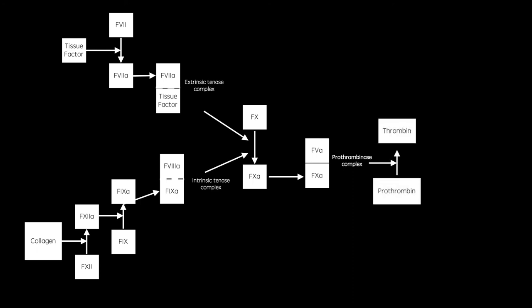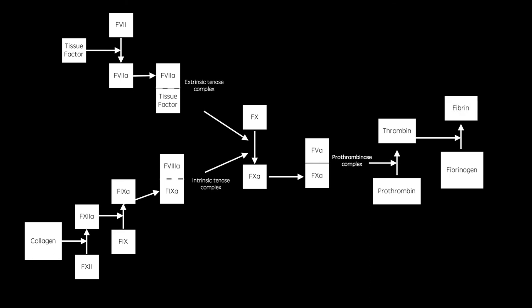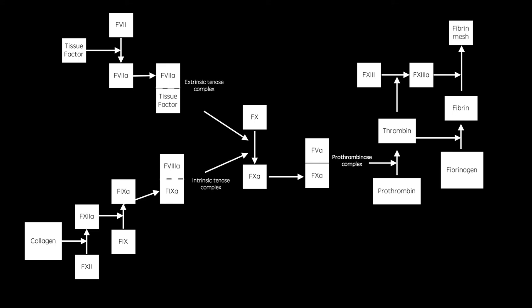The prothrombinase complex converts prothrombin to thrombin, which converts fibrinogen to fibrin and activates factor 13. Fibrin monomers bind together to form fibrin polymers, which are converted by factor 13 to a fibrin mesh. Anticoagulants are drugs which disrupt this pathway and therefore prevent the formation of a thrombus. I'll discuss those more in my video on anticoagulants, the link for which I will also provide below.